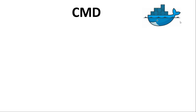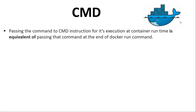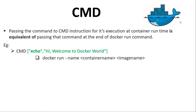It is also important to know that passing a command to CMD instruction for execution at container run time is equivalent to passing the command at the end of the docker run command. This means that if we write a CMD instruction in the Dockerfile — for example, where an echo command is passed to CMD — and then run the container using a simple docker run command, it will give the same result as running a container from a Dockerfile without CMD but with the echo command passed at the end of the docker run command.